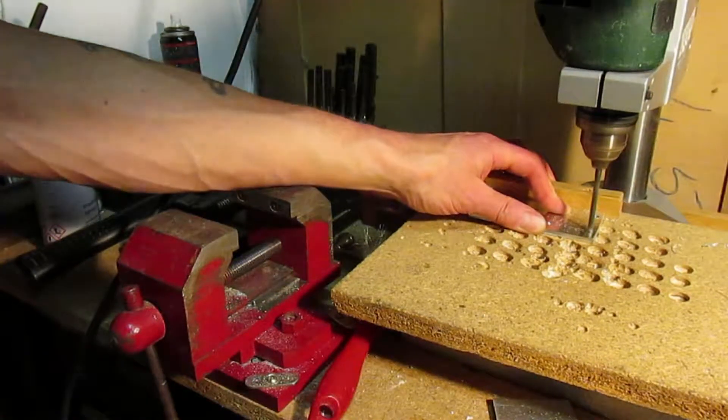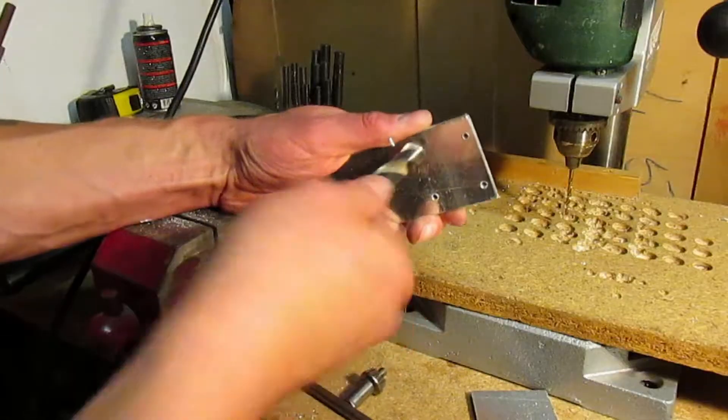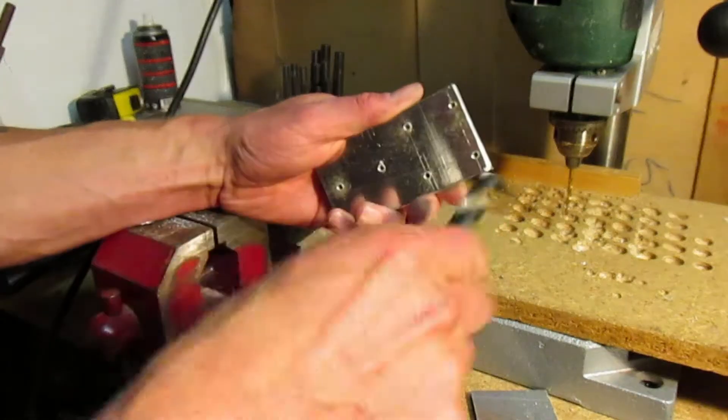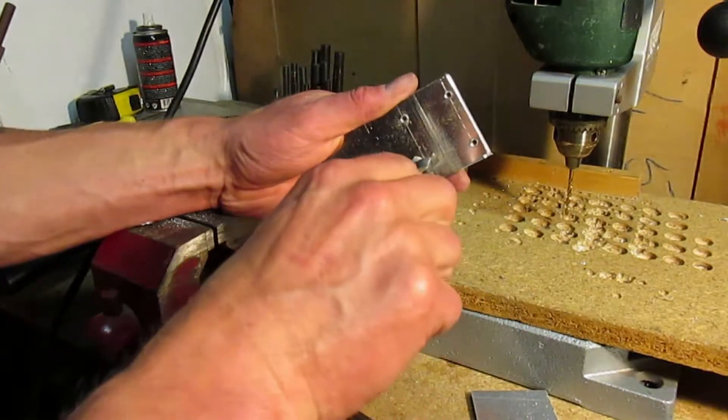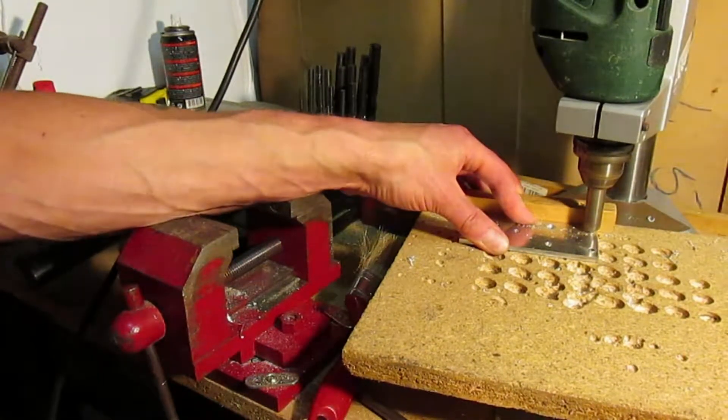Drill five millimeter clearance holes for the wood screws. A quick deburr with a larger drill, and countersink for the wood screw head.